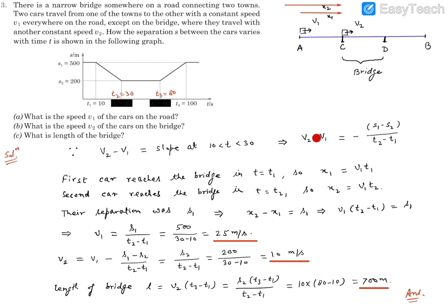Here we have one equation but two unknowns, V1 and V2, so we need one more equation. When the separation was 500 meters, both cars were moving at the same velocity, so relative velocity was zero. At time T1, the first car reaches the bridge and its velocity decreases to V2, introducing a relative velocity. So at T equal to T1, the first car reaches the bridge, having traveled a distance X1 equal to V1 times T1.